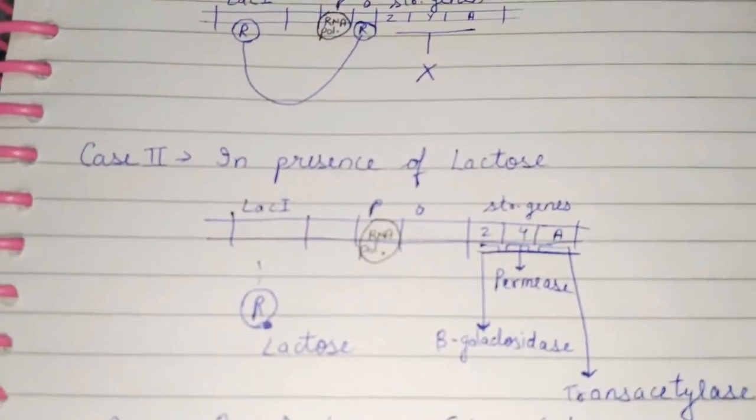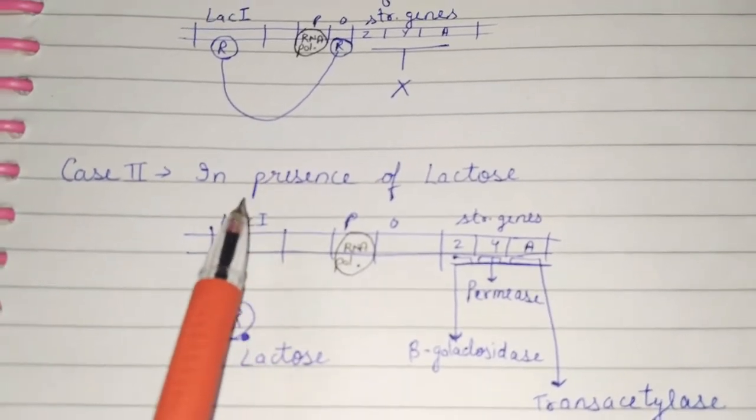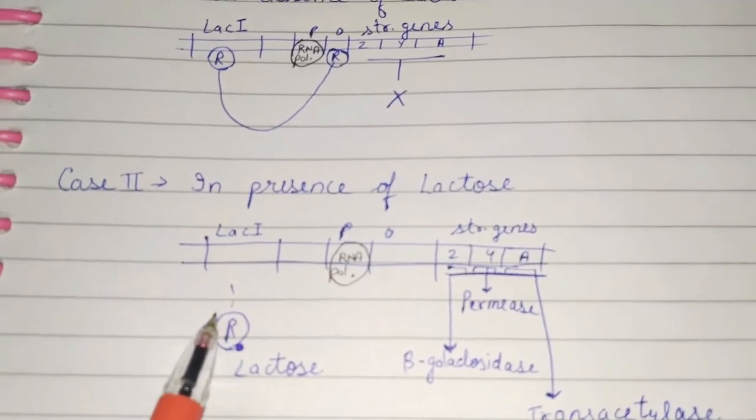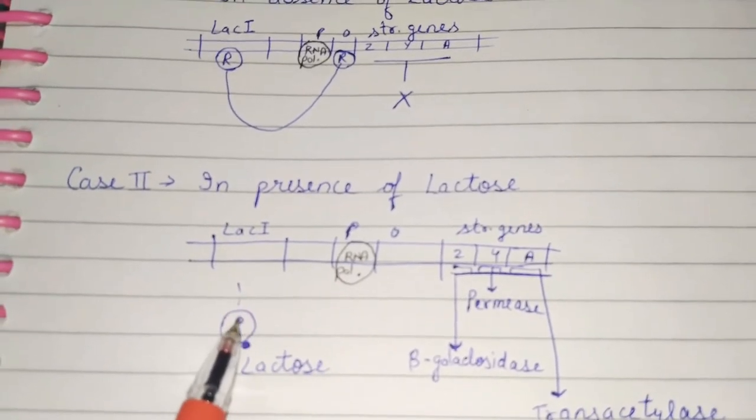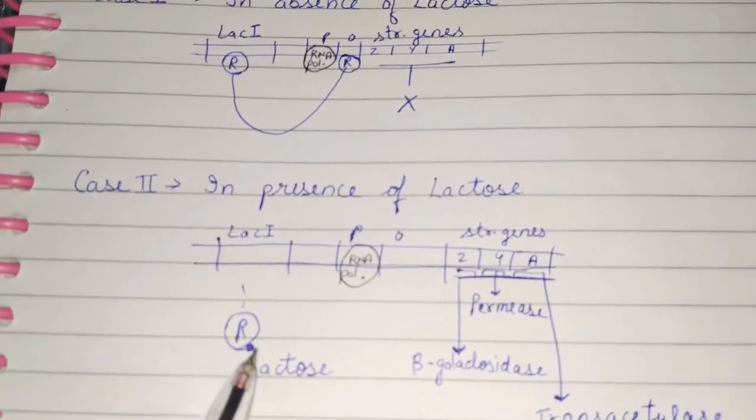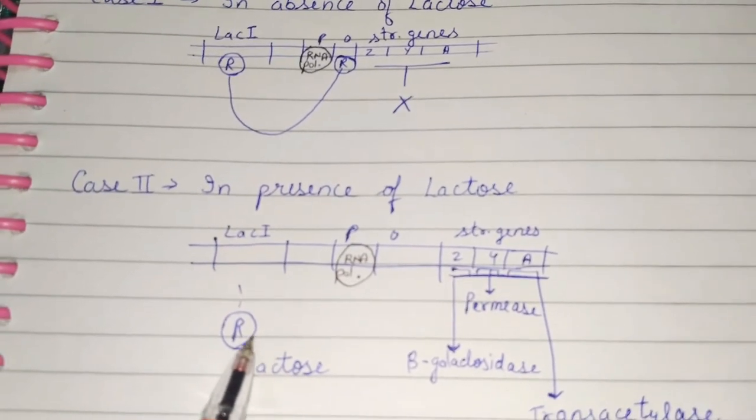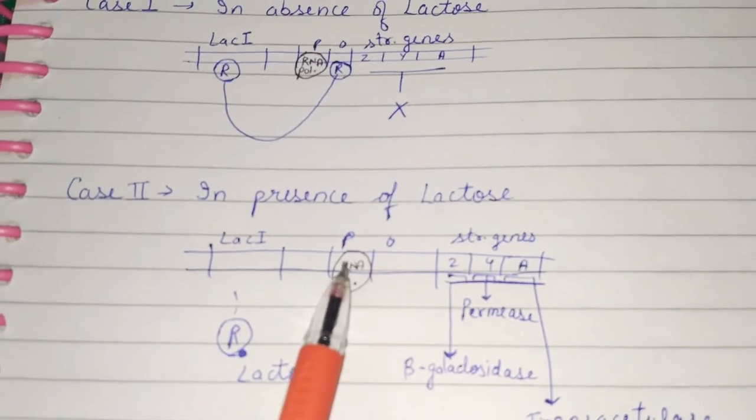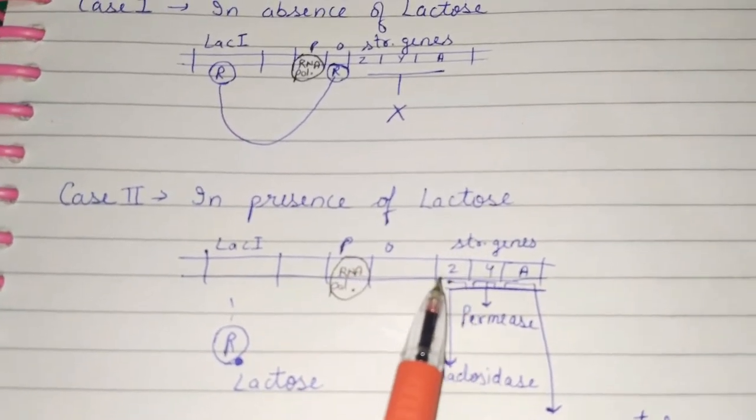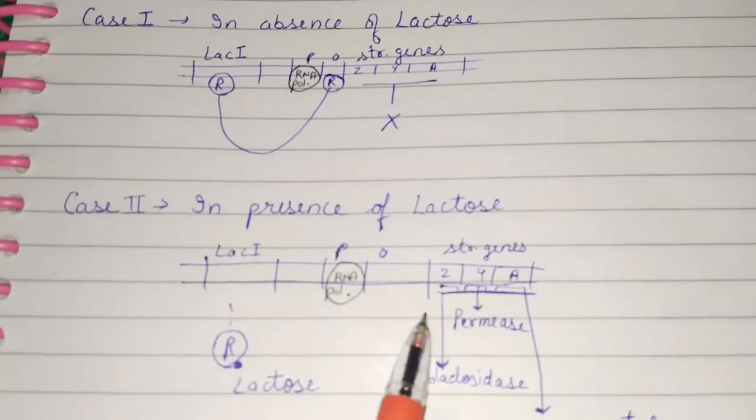But in the presence of lactose, then at activator site of regulatory gene or repressor gene, lactose binds. When lactose binds, it will not bind with the operator. If it does not bind with the operator, then the RNA polymerase can continue its process. Then it forms structural gene into mRNA.